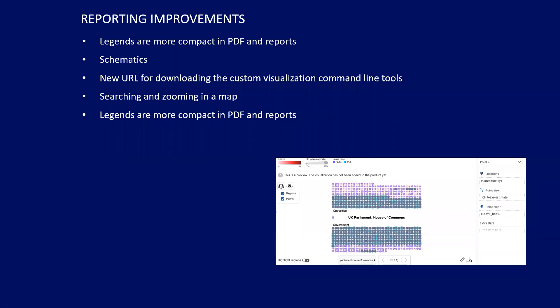Reporting improvements: legends are more compact in PDF and reports, shrunk down so they don't take as much space. Schematics are pretty slick — great if you have an image you want to map out with data, like a layout of an office building showing user counts. It allows you to use your own image as the base. There's also searching and zooming in a map in reports, which wasn't something you could do before.